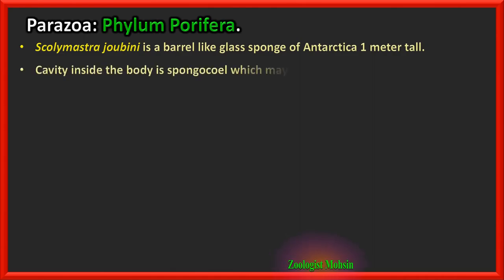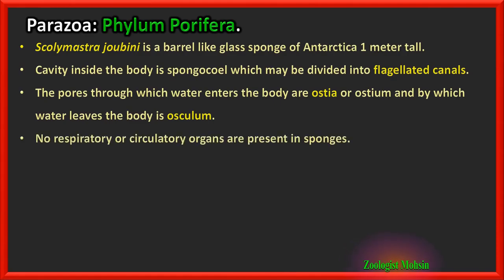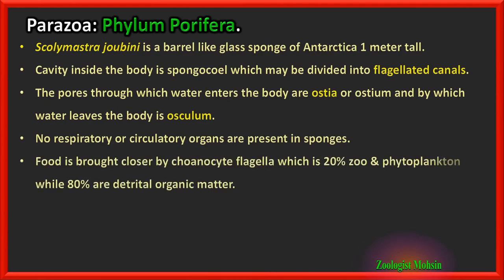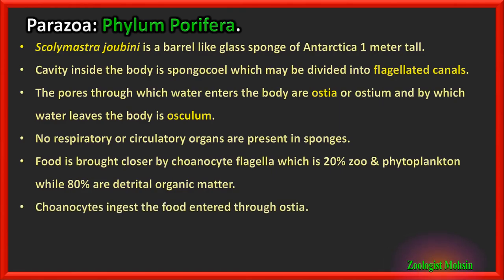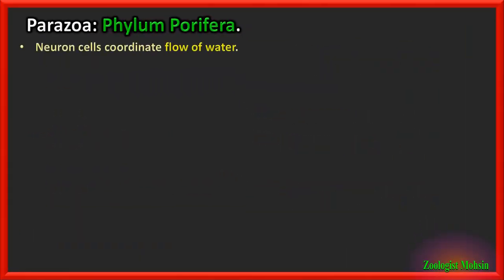The cavity inside the sponge body is the spongocoel, which may be divided into flagellated canals. The pores through which water enters are ostia (or ostium) and by which water leaves are osculum — mostly single osculum but numerous ostia. No respiratory or circulatory organs are present. Food is brought in by choanocyte flagella — 20% zooplankton and phytoplankton, and 80% detrital organic matter. Choanocytes ingest food entered through ostia, acting as digestive cells.